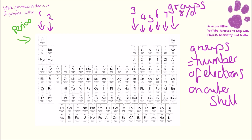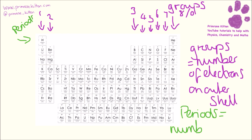Now the periods tell us the number of shells. So here we have period one, everything on this has one shell. People often overlook this one because it's just got these two little things in the middle. Then we have period number two, which has two electron shells. Then we have period number three, which has three electron shells. And period number four, which has four electron shells. Now you can use this really simply and easily to work out how many shells something has, and how many electrons it has on that shell.